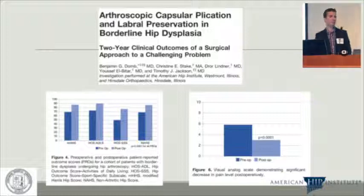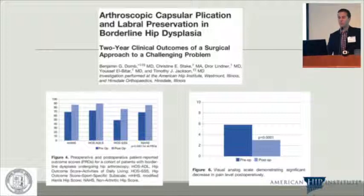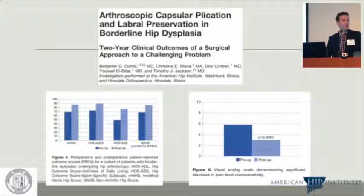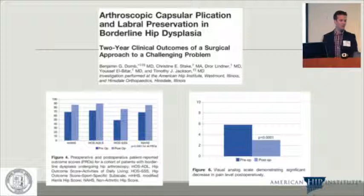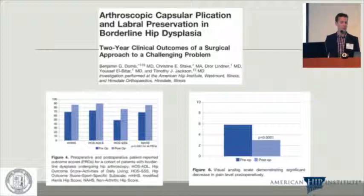We looked at a subgroup of 22 borderline dysplasia patients who received capsular plication and fit the bony criteria. They all had improvement in all postoperative PRO scores: HHS, HOS, mHHS, and BAS. Two or three patients required revision, but these were very active patients who sustained traumatic injuries afterwards with recurrent instability symptoms. They were revised with another capsular plication and did well.